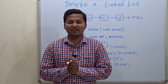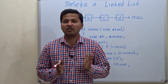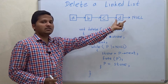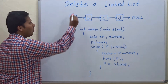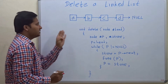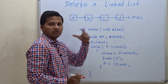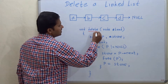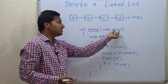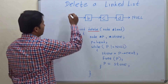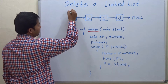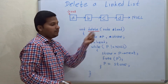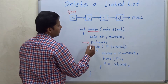Today we are going to see how to delete a linked list totally. We have to delete all nodes of this linked list and free the memory after deleting the nodes. The delete function takes the head of the linked list as a parameter. Now let's start executing the statements.